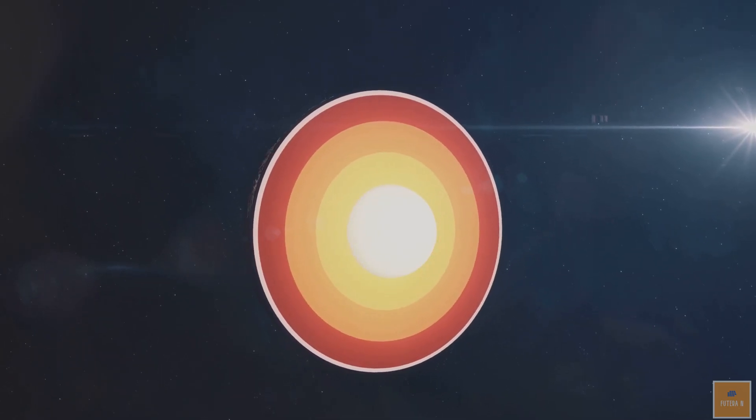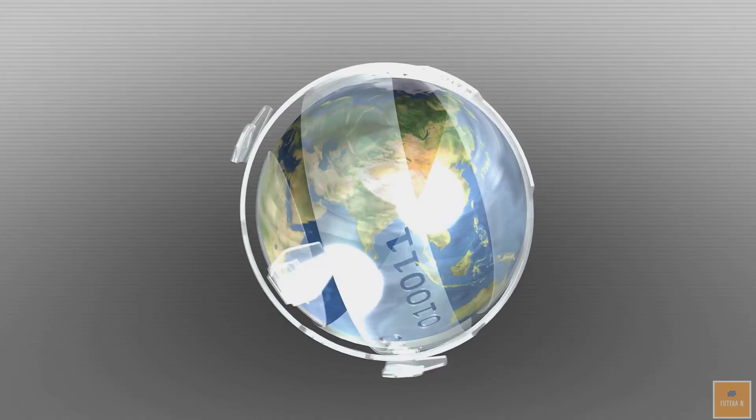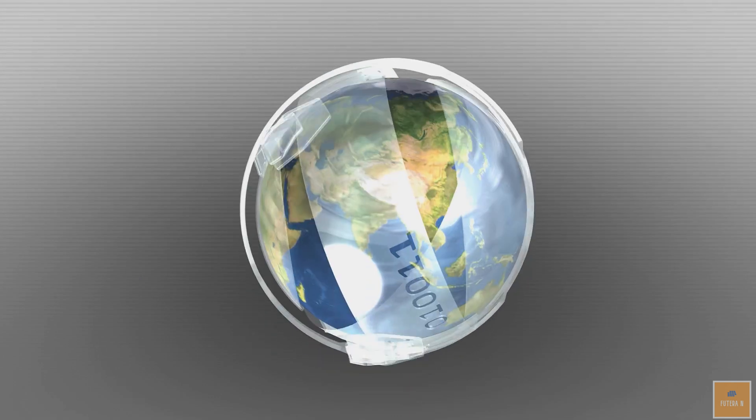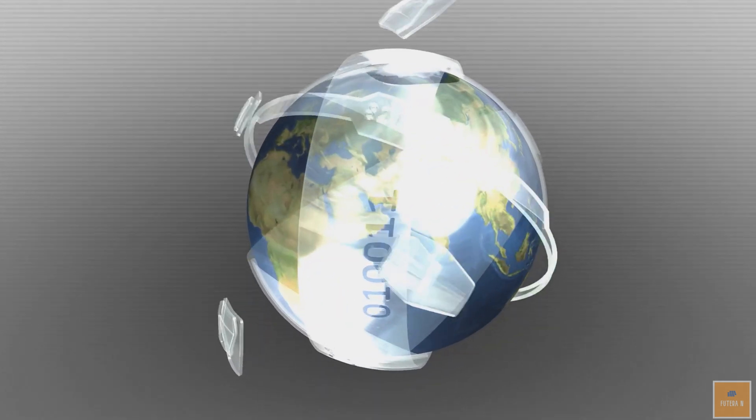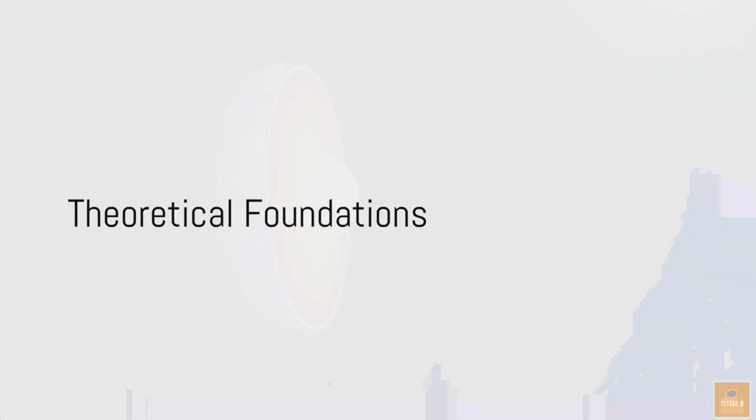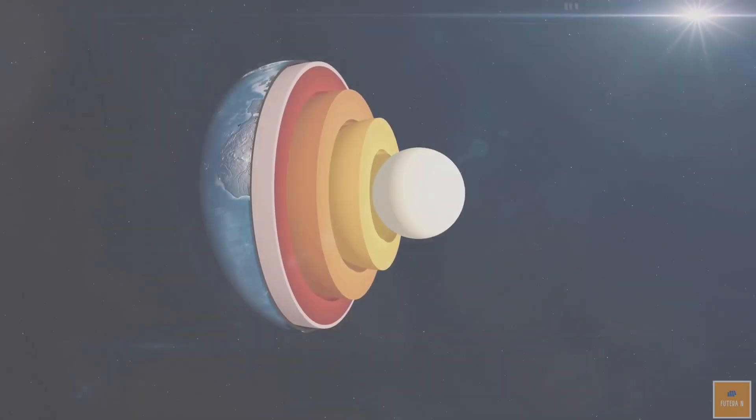The extreme heat and pressure would make drilling through this layer almost impossible. Even if they somehow managed to make it through the mantle and outer core, they would eventually reach the inner core, which is solid and impossible to drill through.